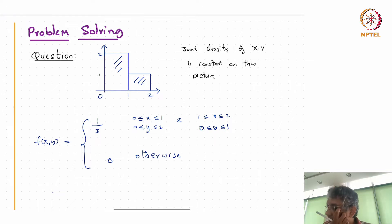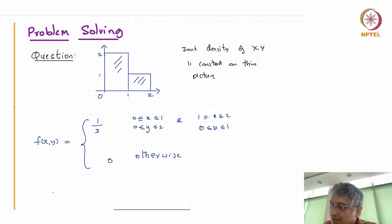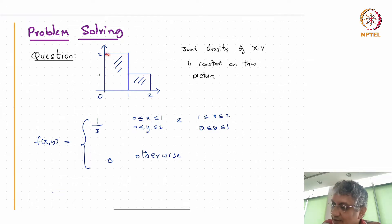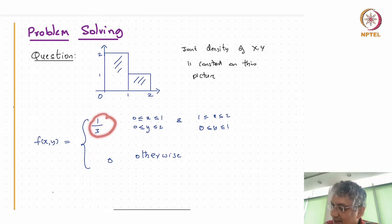How do I find the joint density once I know this fact? Since it's constant, the whole integral has to be 1, so the joint density should be 1 over the area of this picture. This is a rectangle of size 2 and length 1, so the total area is 3. The density should be 1 over 3 in this region.